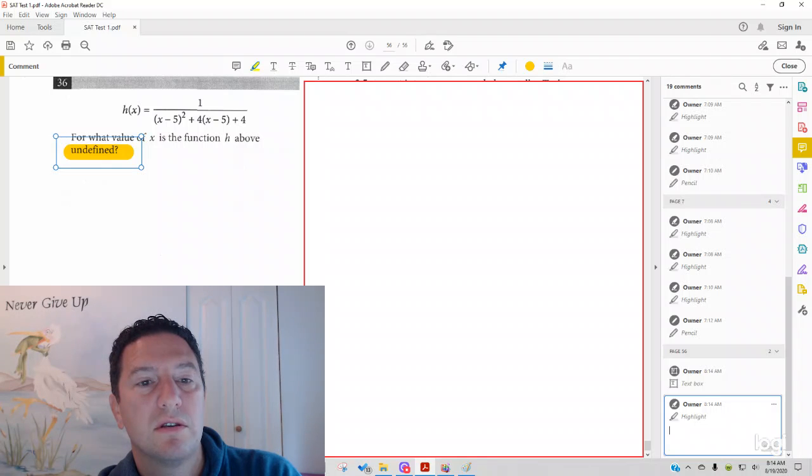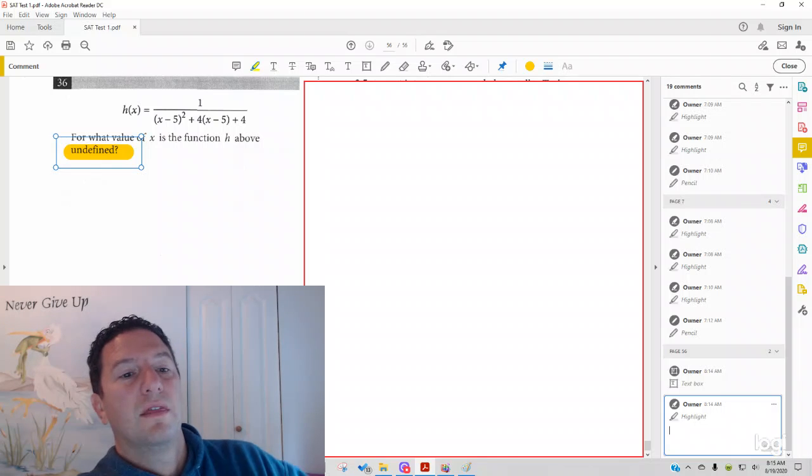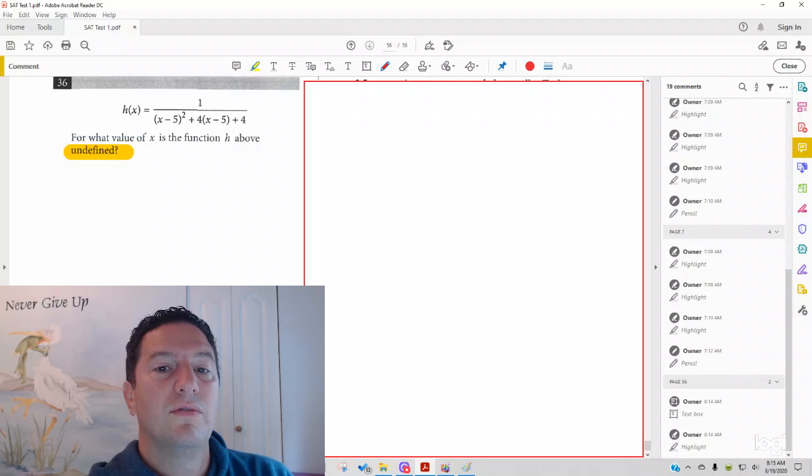But if you notice, if you put 5 into the answer, 5 minus 5 is 0 squared is 0, plus 4 times 5 minus 5 is 0, 4 times 0 is 0, plus 4. You wind up with 1 fourth if you think that the answer is 5.